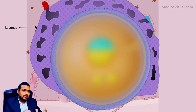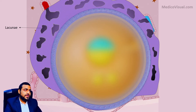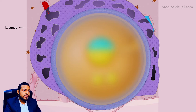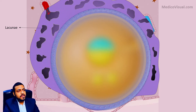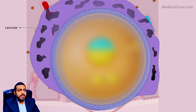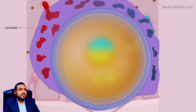As the syncytiotrophoblast was growing and eroding the maternal tissue, it ended up eroding maternal endometrial blood vessels. Let's suppose it eroded a maternal endometrial arteriole — high pressure blood from this arteriole starts flowing into the lacunae. Since the lacunae are interconnected, this high pressure blood flows into all other lacunae throughout the network, and ultimately the blood exits through an eroded maternal venule.